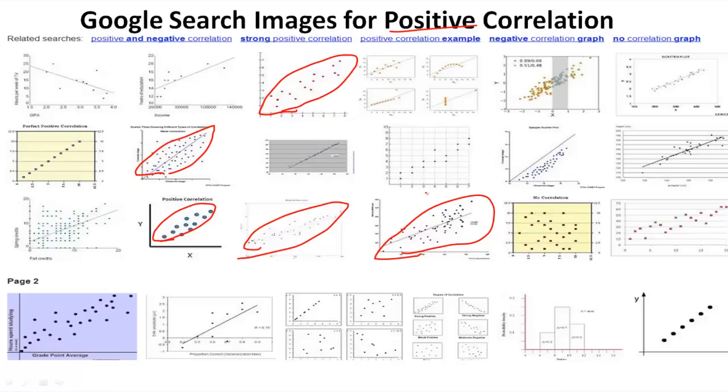The variables are going in the same direction at the same time, so as one variable goes up, the other variable goes up. So as my height goes up, so does my weight. Again, it's just a relationship, not cause and effect.